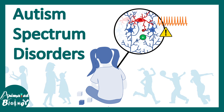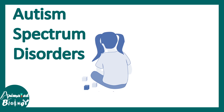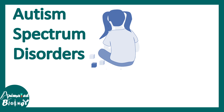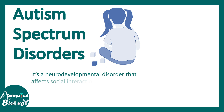In this video we'll be talking about autism spectrum disorders. This is going to be an overview, and in subsequent videos we are going to talk about this disease in more detail. Autism spectrum disorder is a neurodevelopmental disorder that affects the ability for social interaction, communication and social behavior.